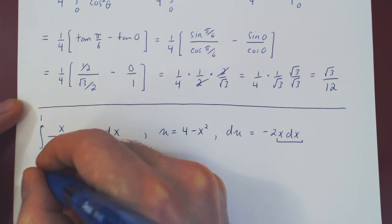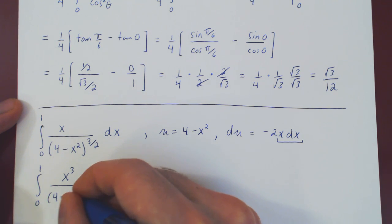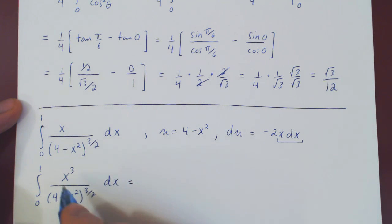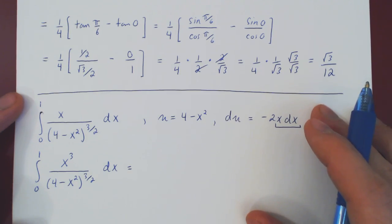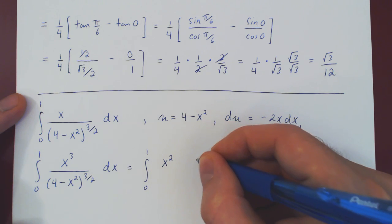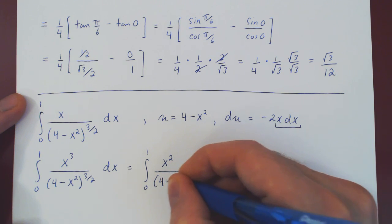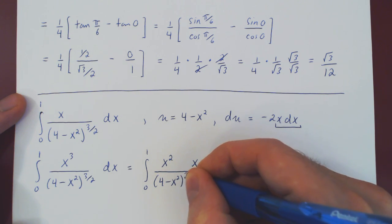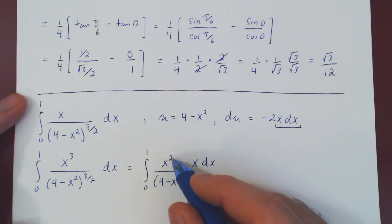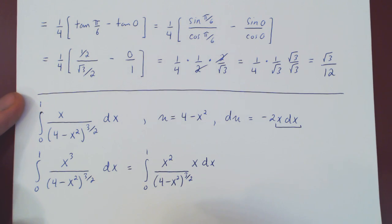If you had instead of an X and X cubed on the numerator, you could pull out the same U substitution by simply factoring out of the X cubed an X. And again, in the end, you'll have everything will be the same except for the X squared, which we will replace as 4 minus U. And so you see,